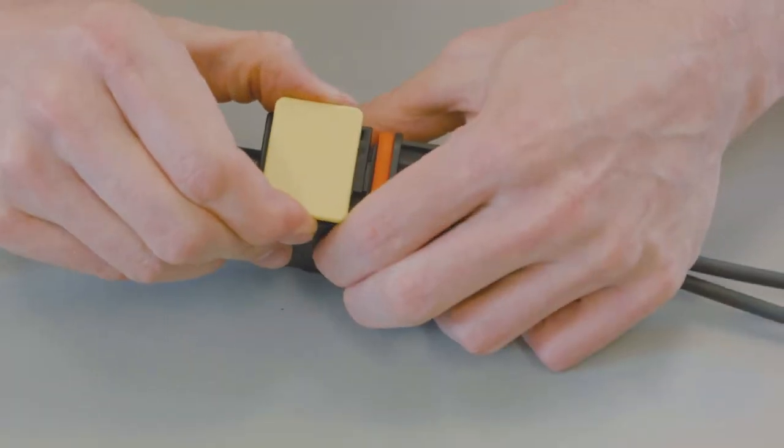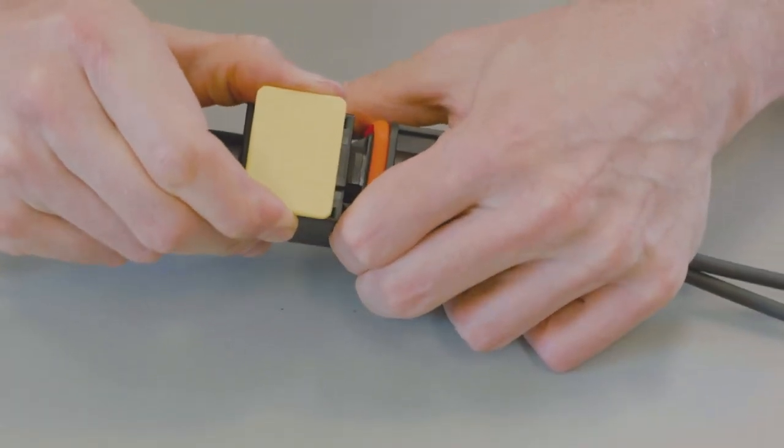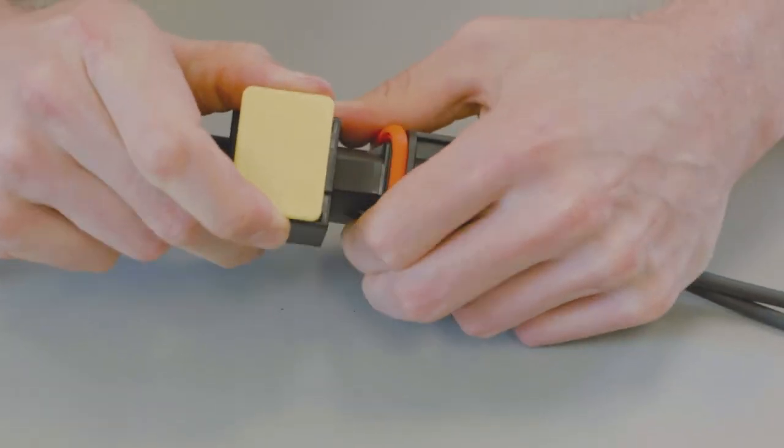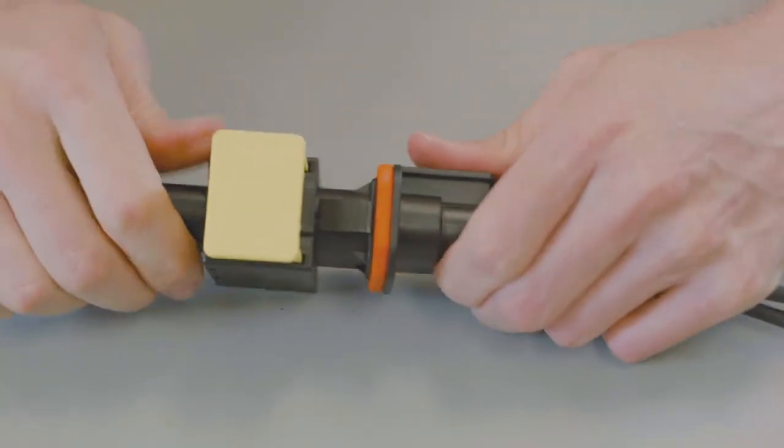To unmate the connectors, release the slide lock on the receptacle housing. Pull the slide lock until the two connector halves are apart.